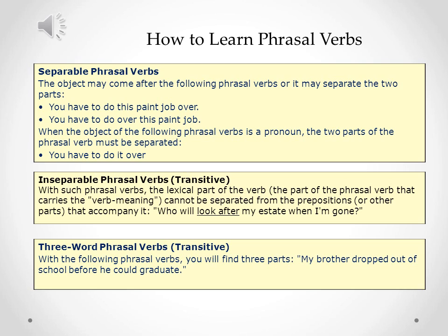For example, 'you have to do this paint job over,' which means you have to do it again. Or we can say, 'you have to do over this paint job.' When the object of the phrasal verb is a pronoun, the two parts of the phrasal verb must be separated: 'you have to do it over.' We cannot say 'you have to do over it' — that sounds odd. So we have to say, 'you have to do it over.'